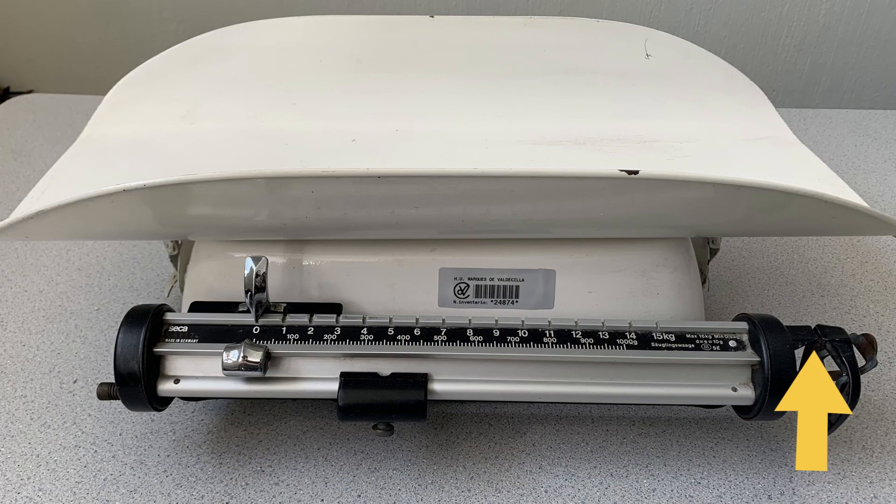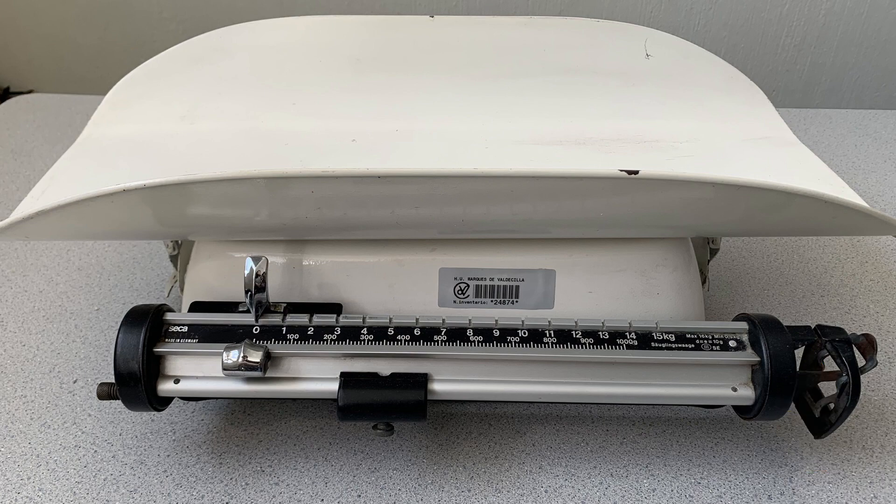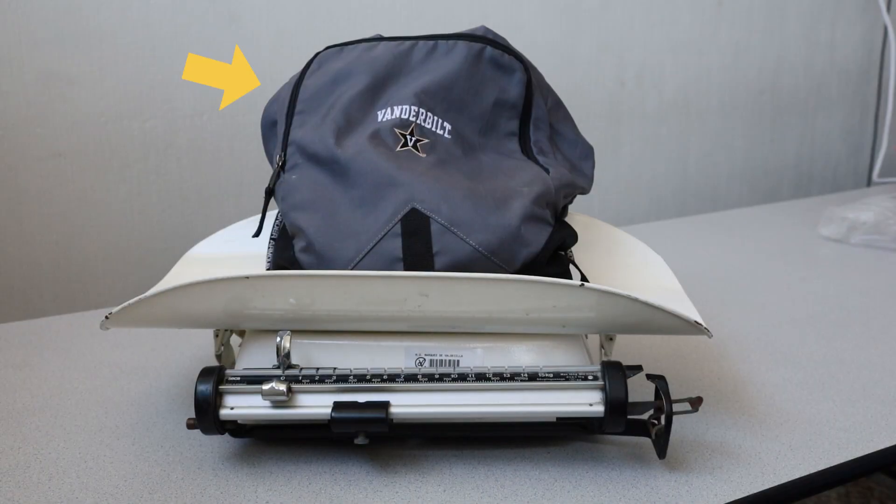To measure an unknown mass, begin by first making sure the scale is level. Once the scale is level, ensure that both the large and the small weights are in their zero location on the railings. Next, place an unknown mass in the weighing basket. The beam balance should be in the elevated position when the unknown weight is placed in the basket.